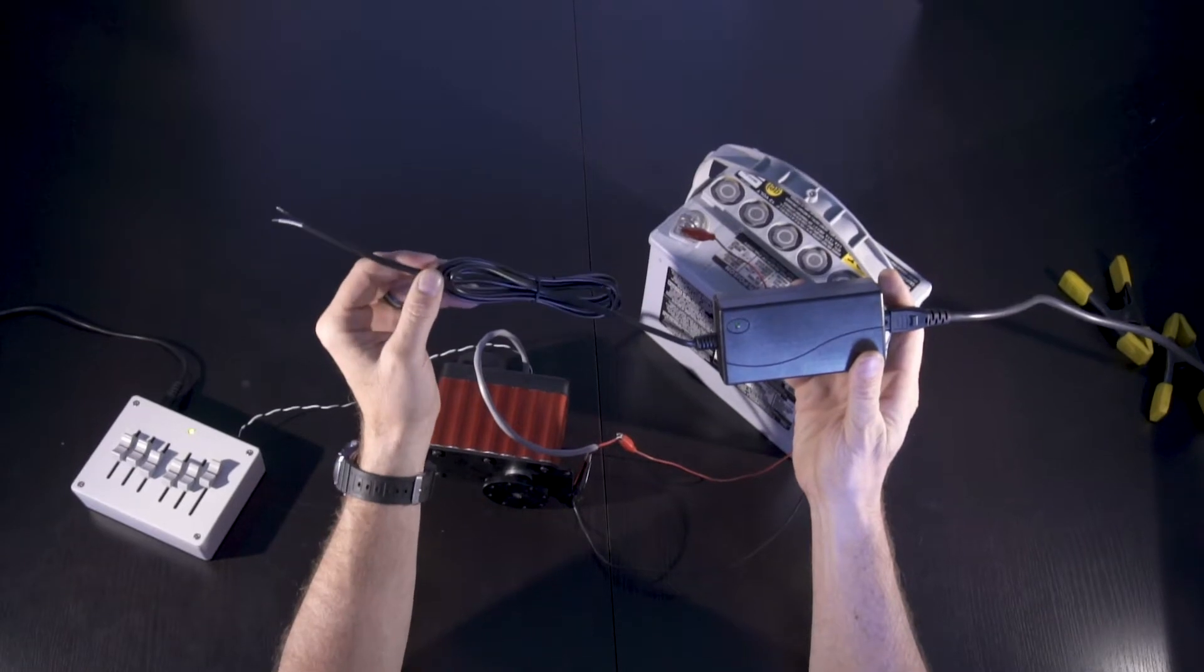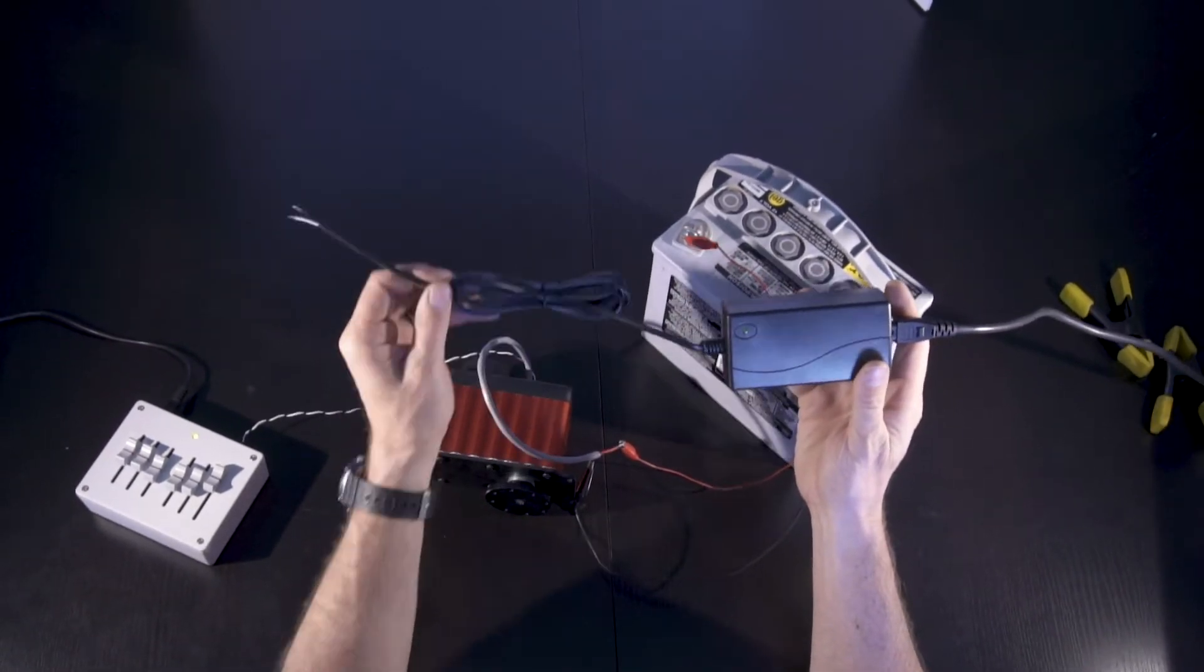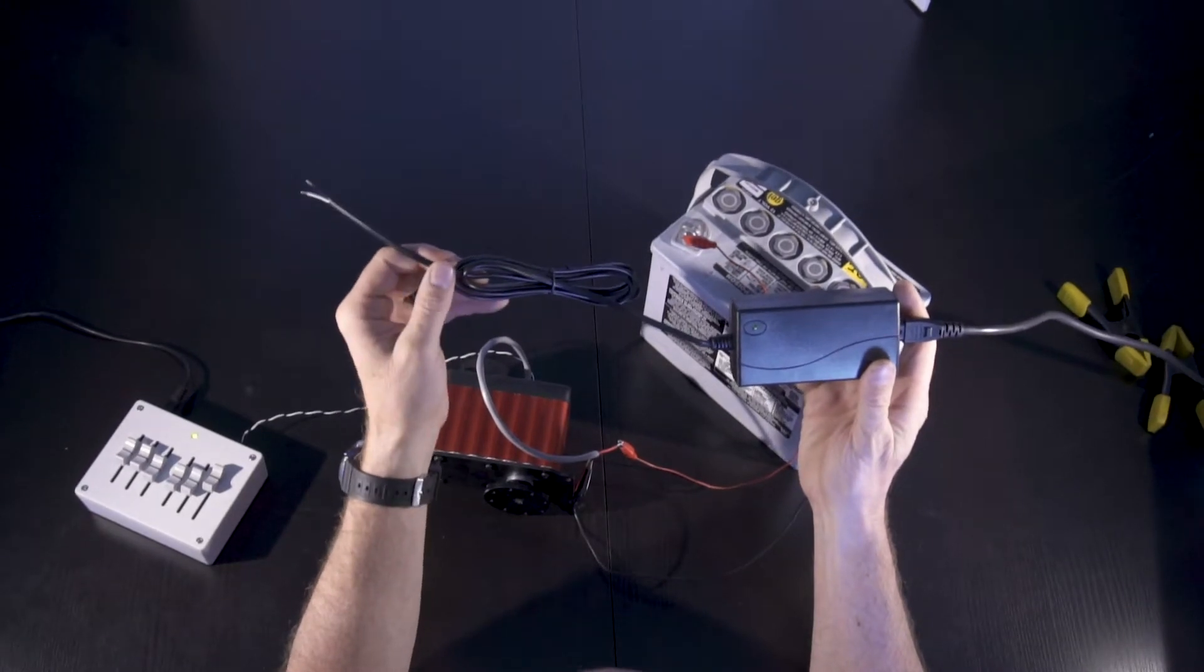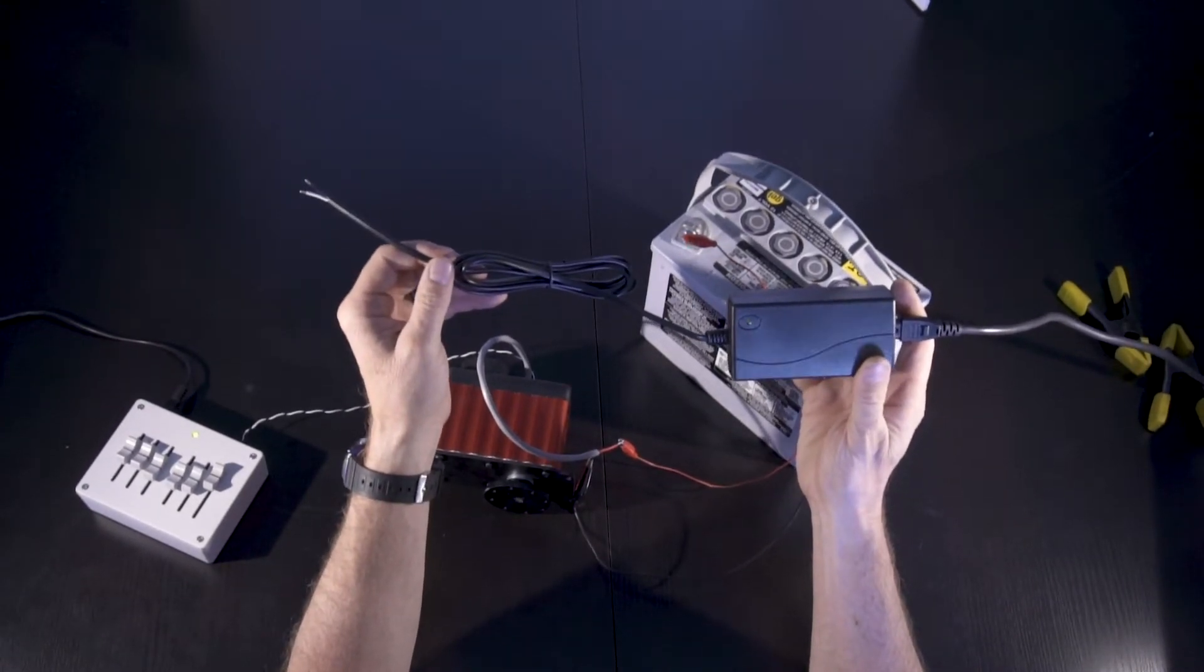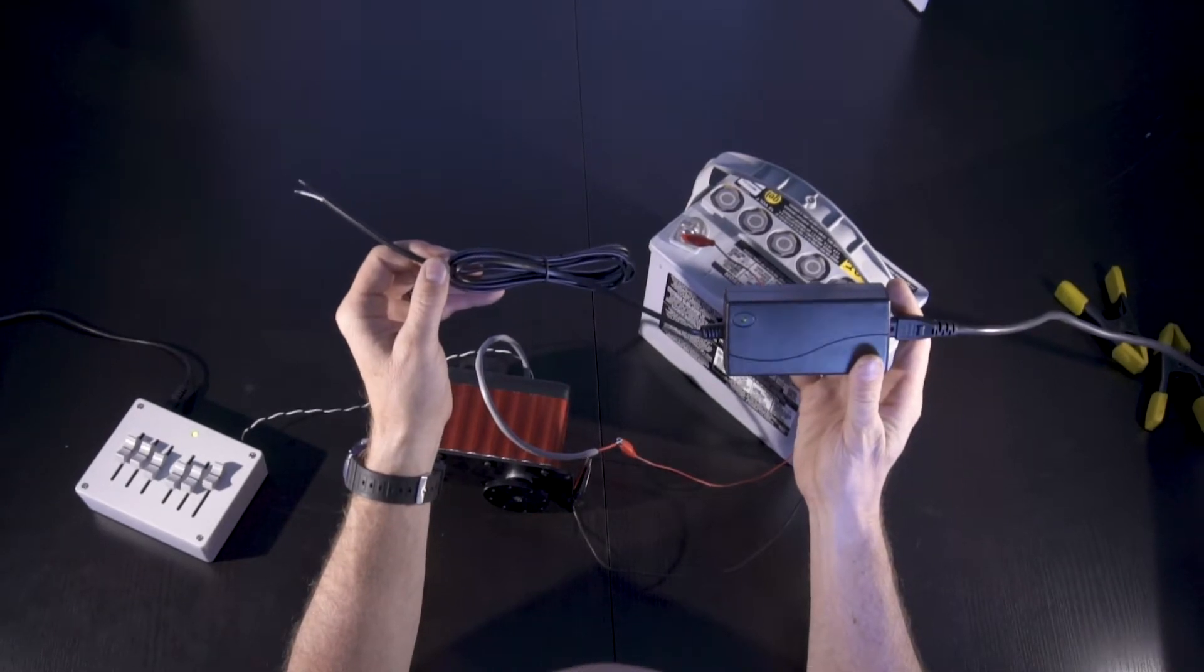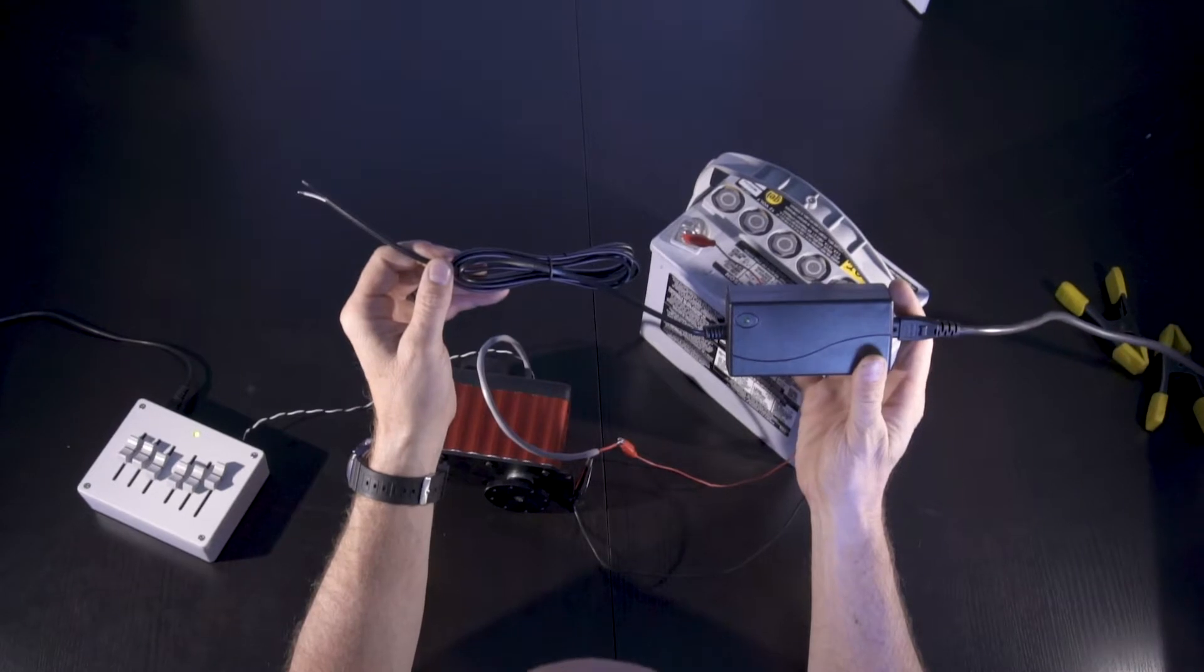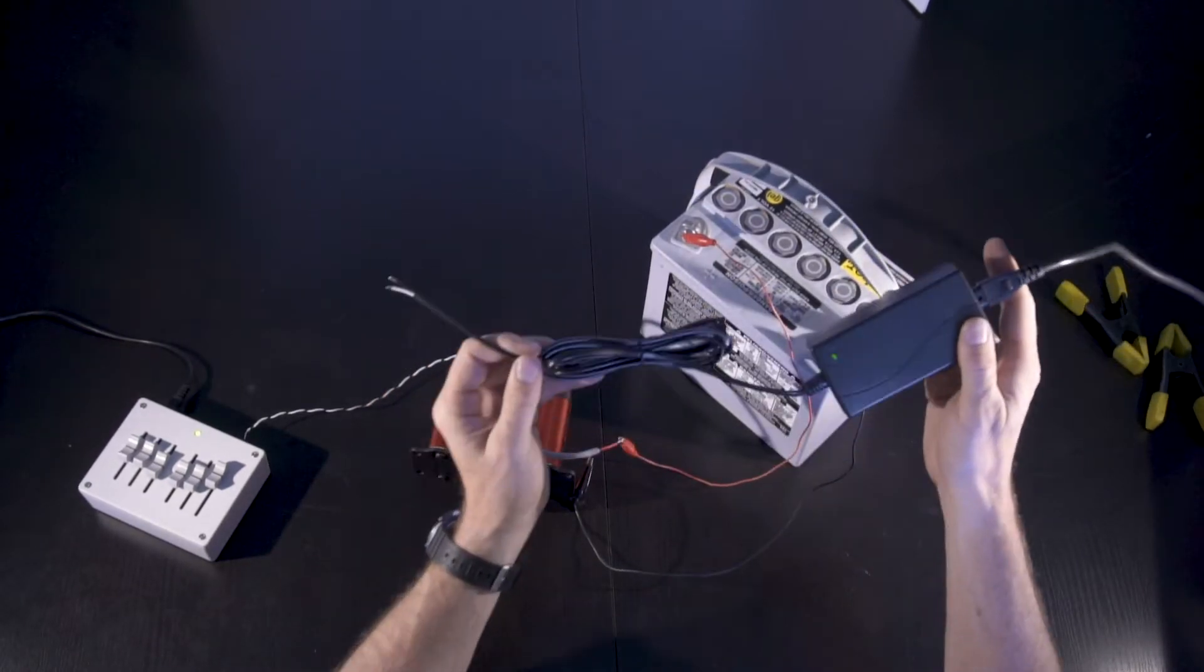They go over current and they go into a hiccup mode when you're trying to start the servo because they can't provide the initial burst of current to get the servo moving. These are made especially to handle that. And these will run four to five of our servos simultaneously without issue.